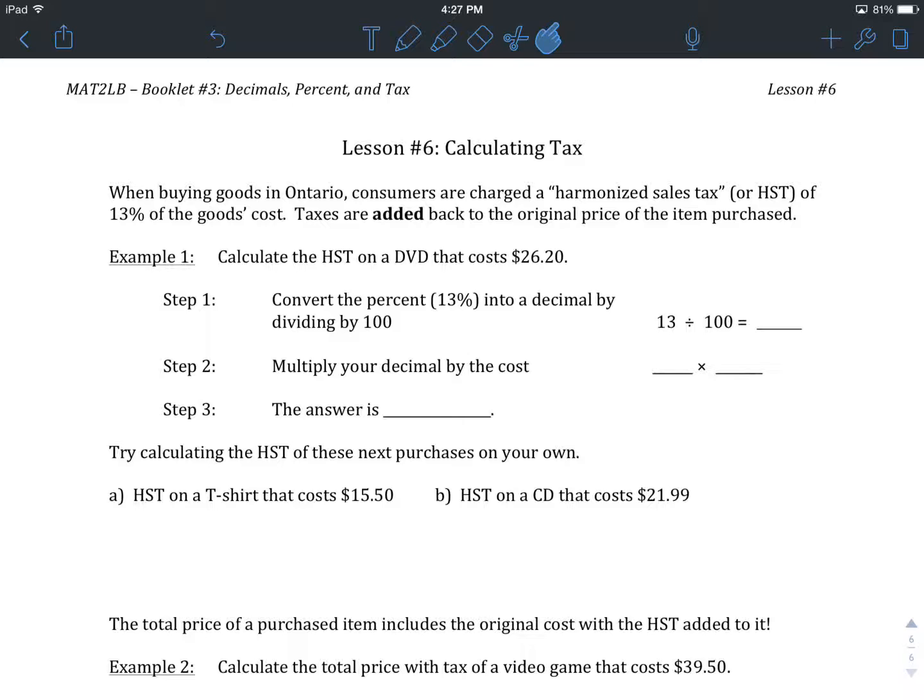This is the grand finale of Booklet Number 3. When we talk about tax, what we're talking about is, in Ontario anyway, the HST, or the Harmonized Sales Tax, which represents a 13% surcharge on goods and services that you buy here in Ontario. That's just a fancy way of saying, every time you get charged for something in Ontario, 13% tax gets charged to you and added back onto the original item.